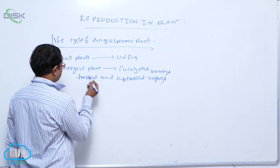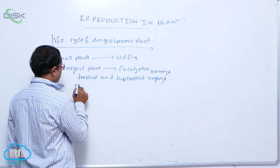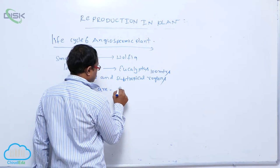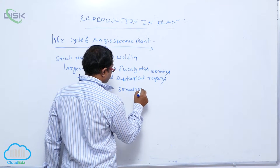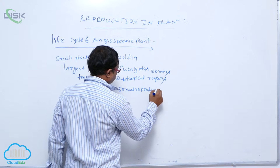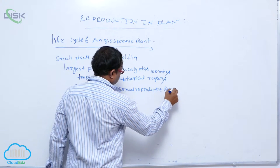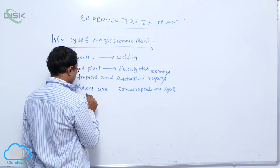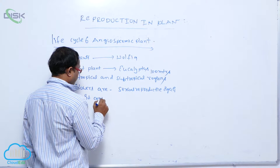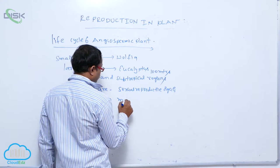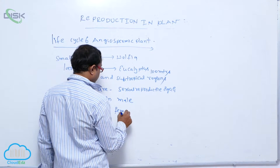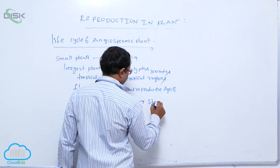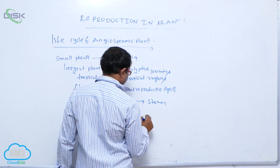The sexual reproductive organs of angiosperms are known as flowers. Flowers contain both male and female reproductive organs. The male reproductive organ is known as the stamen, and the female reproductive organ is known as the carpel.